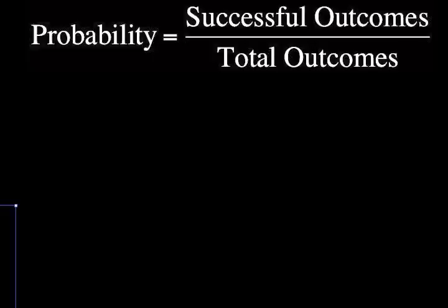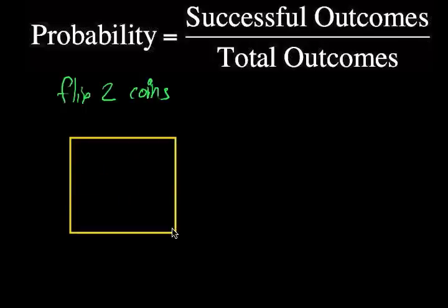Let's try an example. What if we were to flip two coins? When we flip two coins, we have several possibilities that may occur. Why don't we draw a table? This is just a simple table here. On the top, we'll call coin one, so coin one is either going to be heads or tails.